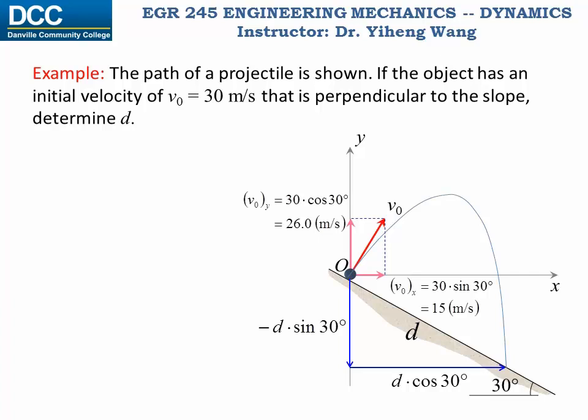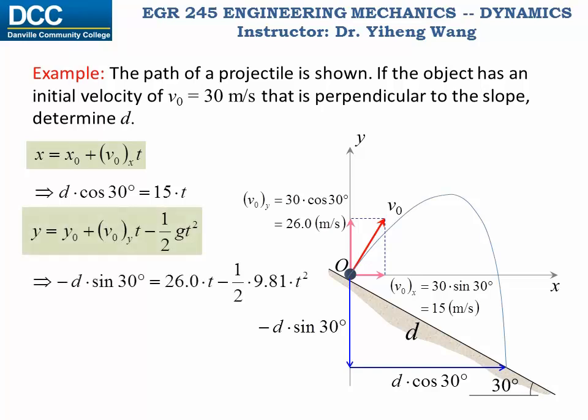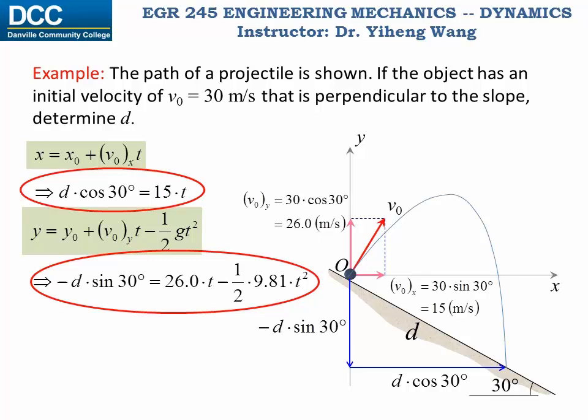Therefore, according to the two formulas we derived earlier for the horizontal position and the vertical position, we have two equations with two unknowns, d and t, so we can solve both unknowns simultaneously, to be t equals to 7.06 seconds and d equals to 122 meters, and this d here is the answer we are looking for.